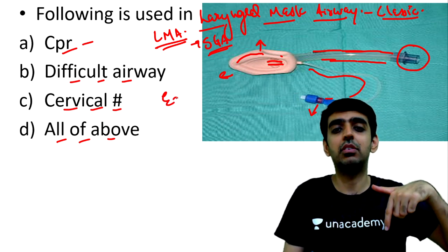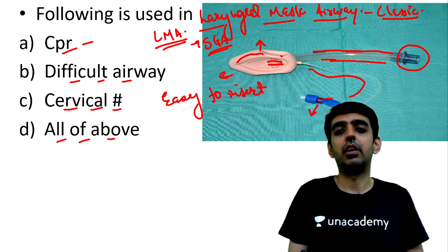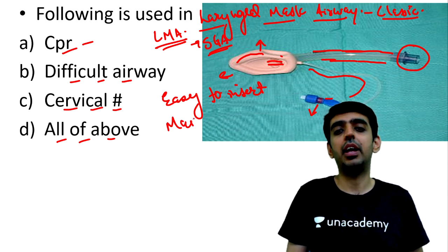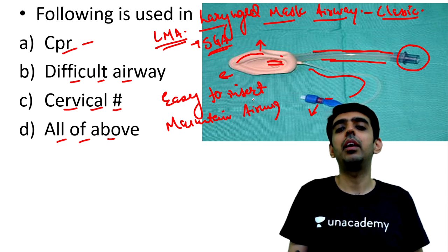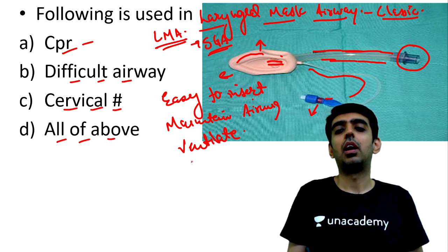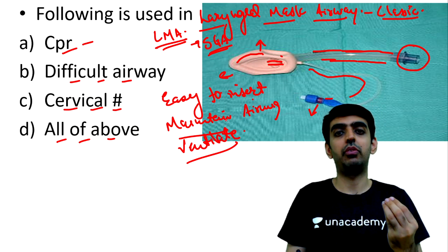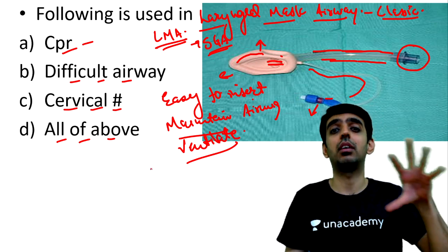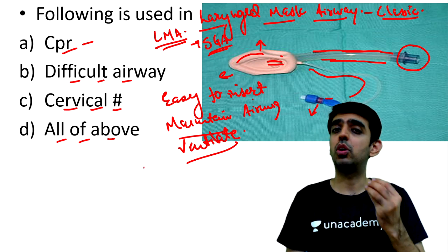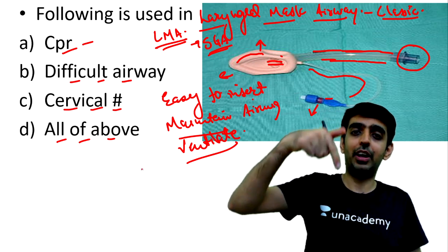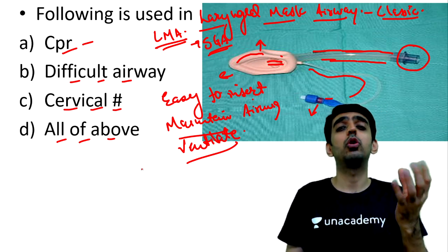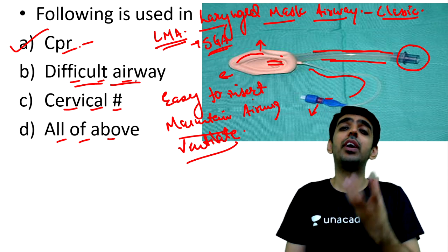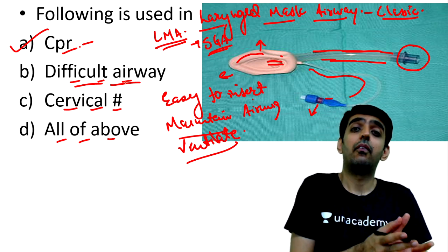The LMA is used in CPR because it is easy to insert — even paramedics can use it without a learning curve. You simply open the mouth, hold it like a pen, and glide it in to maintain the airway and ventilate the patient. In difficult airway scenarios where you cannot ventilate or intubate, supraglottic airway devices are recommended by difficult airway society guidelines.